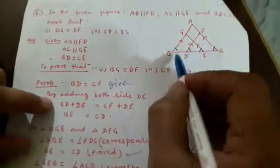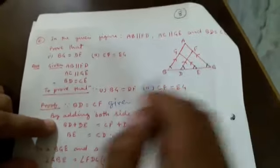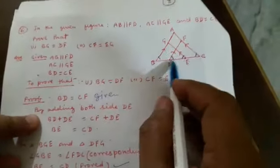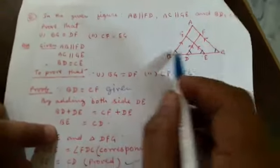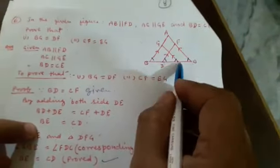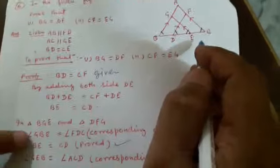Proof: BD is equal to CE as given. Adding DE to both sides: BD plus DE is equal to CE plus DE. Therefore BE is equal to CD, since BD plus DE equals BE and CE plus DE equals CD.